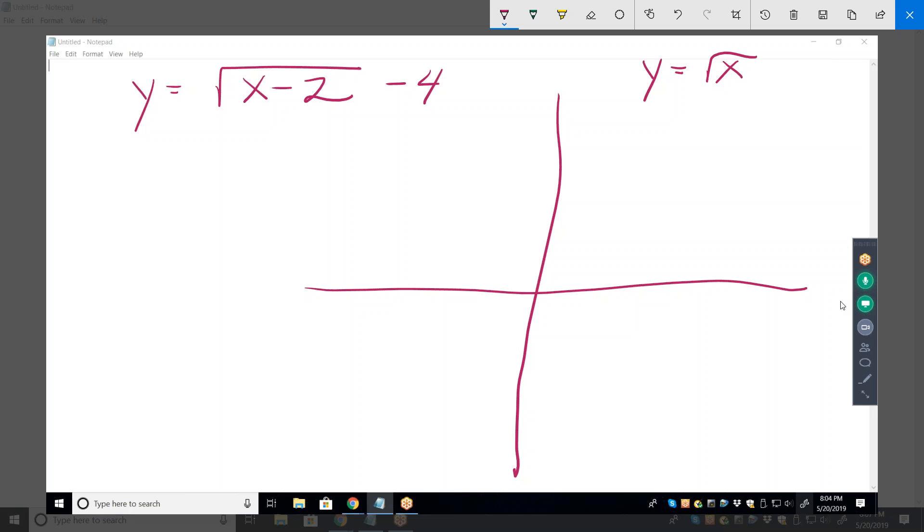That graphs like that. That starts at zero. It kind of goes like that. Okay. Both x and y can only be zero or positive notice. Mm-hmm. Okay.